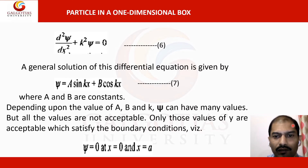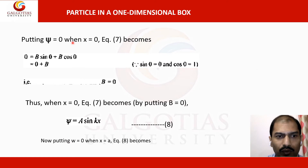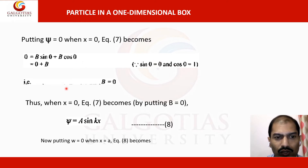The boundary conditions are ψ = 0 at x = 0 and ψ = 0 at x = a. Applying the first condition, ψ = 0 when x = 0: substituting into the general solution gives 0 = A sin(0) + B cos(0). Since sin(0) = 0 and cos(0) = 1, this gives B = 0. So the equation simplifies to ψ = A sin(kx).